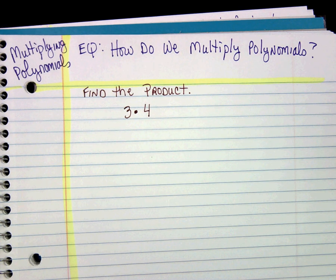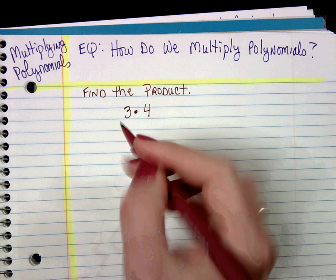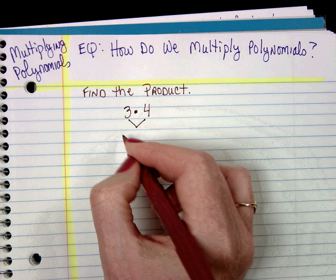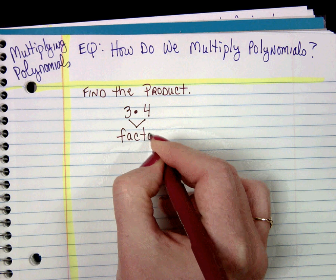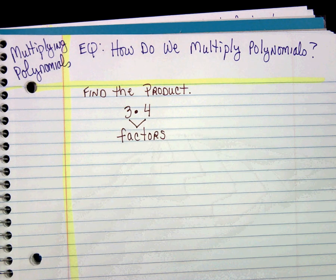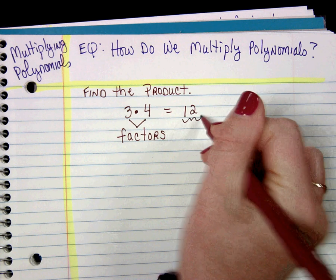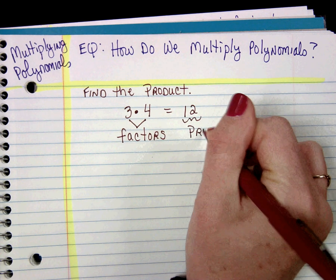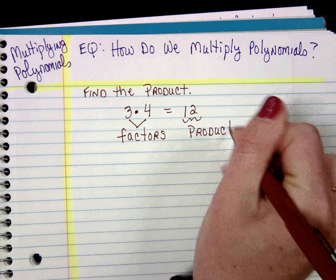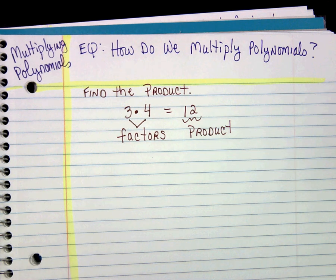Three and four are called the factors. They are the factors that create the product of 12. That's really important because our products and our factors are going to get way more complicated at this point.